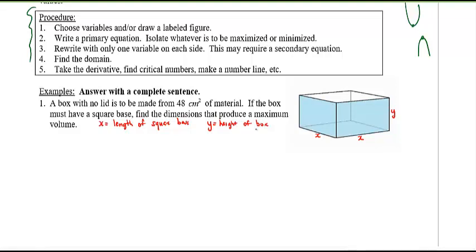What is our primary equation? We're trying to maximize volume. Volume equals base area times height, so V equals x squared times y. That's the primary equation. The problem is I've got two variables on the right-hand side, which is no good.